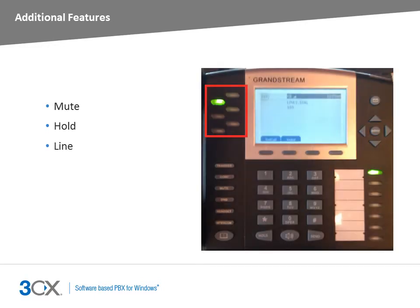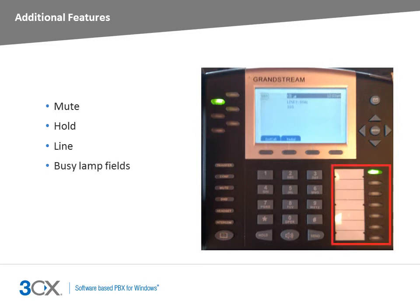The line buttons can be used to manage incoming and active calls. If you are on a call with a client and require information from a colleague, you can put that client on hold, hit another line button and dial your colleague's number to perform a new call on that line. Once done, you can hit the line button associated with the original caller and convey the information retrieved from your colleague. The buttons shown here are busy lamp fields. Your 3CX phone system administrator can configure the busy lamp fields for you to see the status of other extensions.